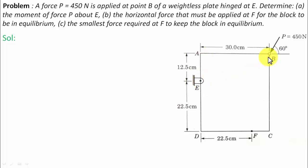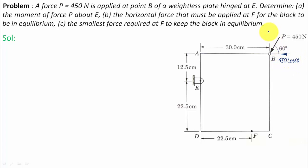This is the weightless plate hinged at E, and there is force P acting at point B. If you keep your right-hand thumb there and try to move your baby finger along this direction — this is the line of action — it indicates that force P produces a clockwise turning moment. To calculate this, we need to resolve the force into components: the horizontal component is 450 cos 60, and the vertical component is 450 sin 60.